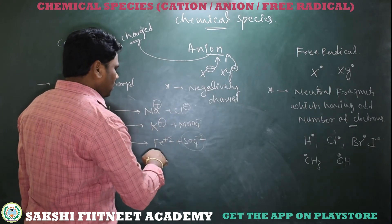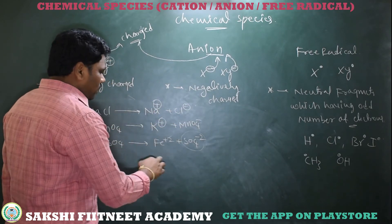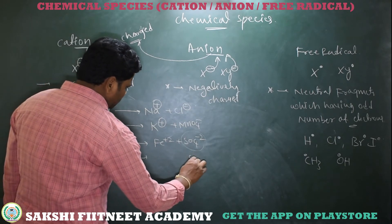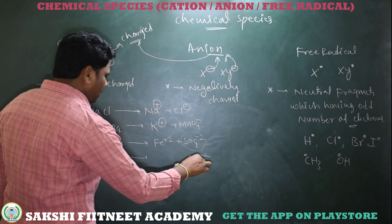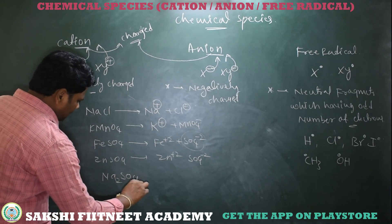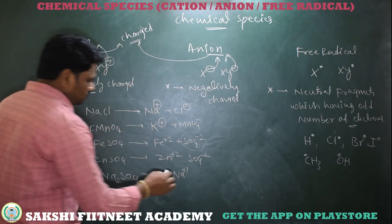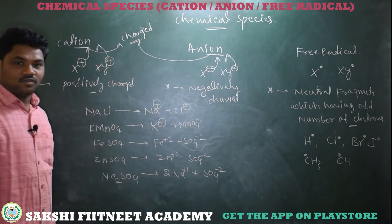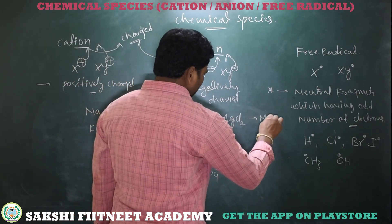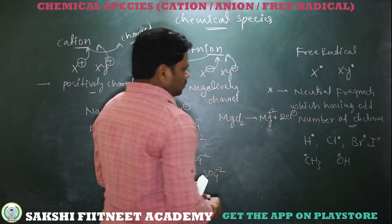For ZnSO₄: SO₄²⁻ is a polyatomic anion, so zinc should be plus two. For Na₂SO₄: two sodium atoms each give plus one oxidation state — plus one plus one gives plus two — neutralized by SO₄²⁻. For MgCl₂: magnesium has a plus two charge, so each chlorine gives minus one oxidation state — giving two Cl⁻.